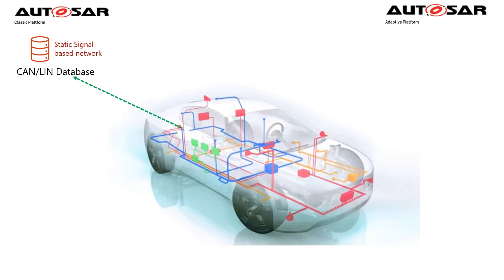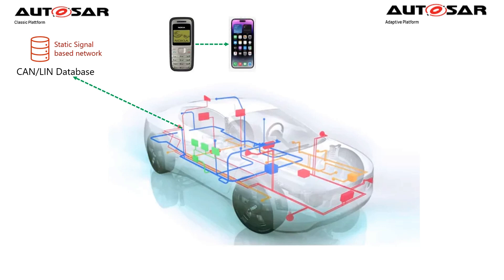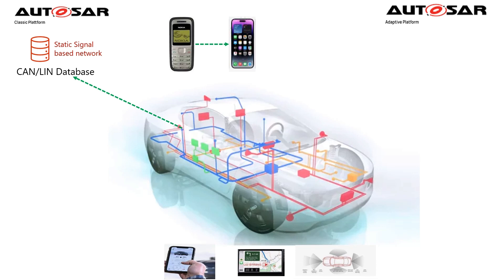But cars are becoming smarter, as you can see from what happened with smartphone evolution in the last decade. Your cell phone is not just for making a phone call or sending messages anymore — it can do many things. The same thing is happening in the automotive industry. More and more applications are being integrated into the car, such as connected features, navigation, autonomous driving, and so on. For those high-end applications, the old approach with static network signal-based communication is not possible to handle many use cases.